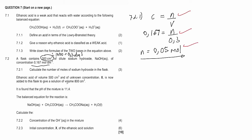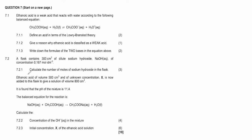Ethanoic acid of volume 500 cm³ and unknown concentration x is added to this flask to give a combined solution volume of 800 cm³ — that's 300 plus 500. It is found that the pH of the mixture is 11.4. The balanced equation for the reaction is given, and question 7.2.2 asks us to calculate the concentration of the hydroxide ions in the mixture.